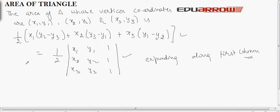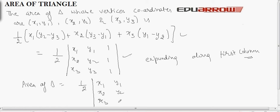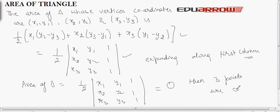Also, if we have to prove that three points are collinear, we can use the area of triangle formula: if the area equals zero — that is, ½ |determinant of x1, x2, x3; y1, y2, y3; 1, 1, 1| = 0 — then the three points are collinear.